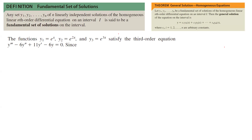Take a look at these functions: e^x, e^(2x), and e^(3x). They all satisfy the third-order differential equation: y‴ − 6y″ + 11y′ − 6y = 0. So if you take the third derivative of e^x and plug it in, minus 6 times the second derivative of e^x, plus 11 times the first derivative of e^x, minus 6e^x, it becomes 0. The same holds for each of these functions.